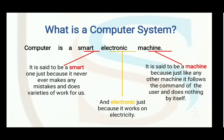A computer is said to be a smart electronic machine. Why is it called smart? Because it never ever makes any mistake and can do a variety of work. Whatever work we ask, it is always ready to do it. For example, if you do any work without anyone's help, very quickly and easily, your teacher calls you a smart boy or smart girl. In the same way, a computer does its work without anyone's help, very quickly and very easily.